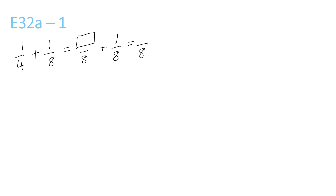What you want to do for this question is make sure both the numbers are the same before adding. So what numbers do 4 and 8 both go into? It's 8 — that's the lowest number that they both go into. 4 times 2 is 8, so that means you have to times the top by 2 to get 2 over 8. This is already over 8, so you can just bring it over here and keep it as 1 over 8.